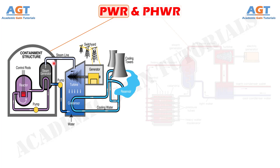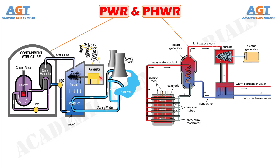On the other hand, a pressurized heavy water reactor is a nuclear reactor that uses heavy water as its coolant and neutron moderator. Pressurized heavy water reactors frequently use natural uranium as fuel, but sometimes also use very low enriched uranium.